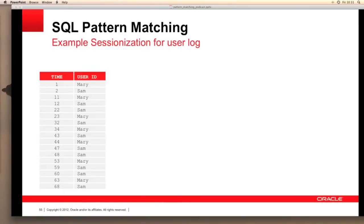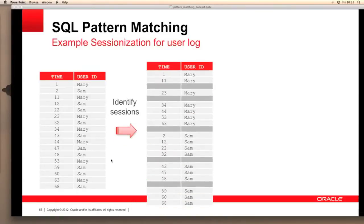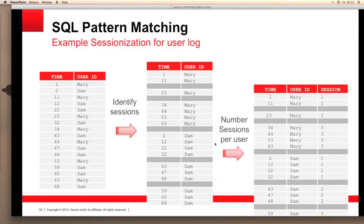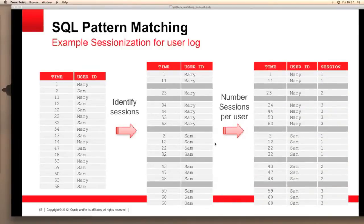If we take a raw log file, the first step is to identify the sessions by user. The next step is to aggregate that data to determine the total number of sessions per user. We're using a built-in function to return a running total of the number of sessions per user. Here you can see that Mary has logged three separate sessions, and Sam has also logged three separate sessions. So let's look at the SQL match recognize statement used to create this output.